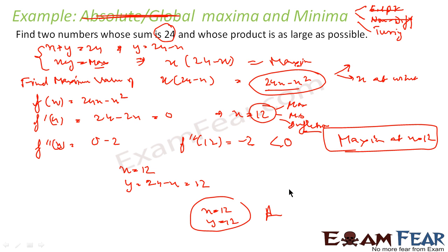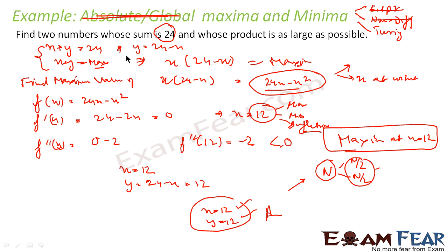The general rule is: if you have a number n and you want to divide it into two parts such that the product is maxima, just split it into two equal parts of n/2. In this case the product will be maxima. So if you get such a question in an exam, the answer will be n/2 and n/2. Here n is 24, so the answer is 12 and 12. We converted the statement into a mathematical representation, differentiated, confirmed the maximum via double differentiation, and got x = 12, y = 12.